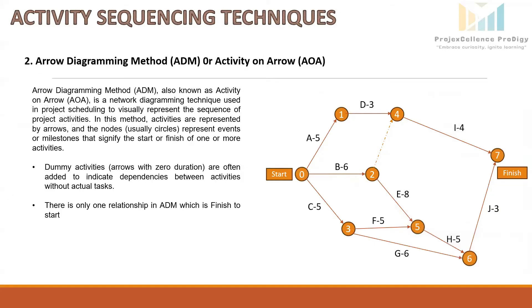Next is the Arrow Diagramming Method, ADM, also called Activity on Arrow, AOA. It is a network diagramming technique used in project scheduling to visually represent the sequence of project activities. Activities are represented by arrows and nodes — the nodes represent events or milestones that signify the start or finish of one or more activities. ADM was historically one of the first methods used for project scheduling, closely associated with CPM, particularly in construction and manufacturing. However, it has been largely replaced by PDM because AOA has many limitations.